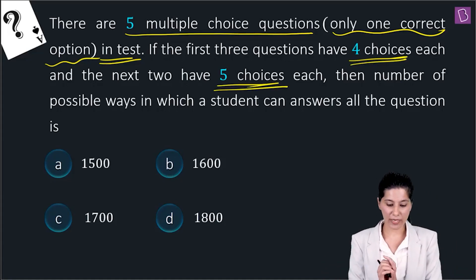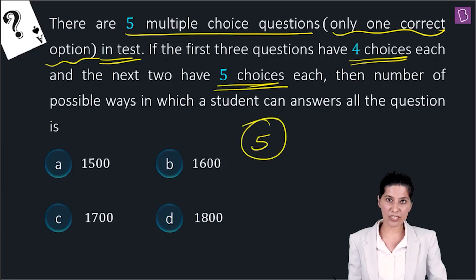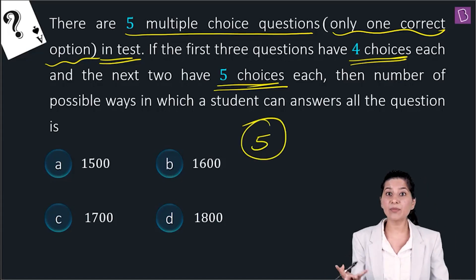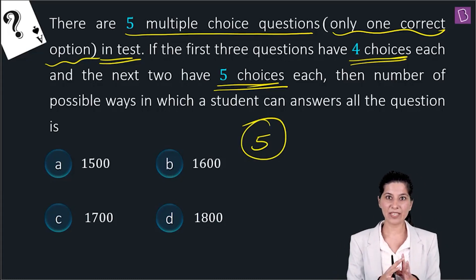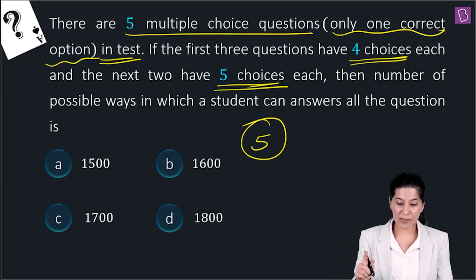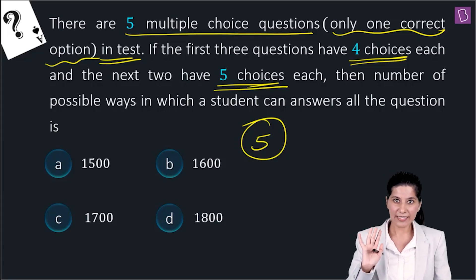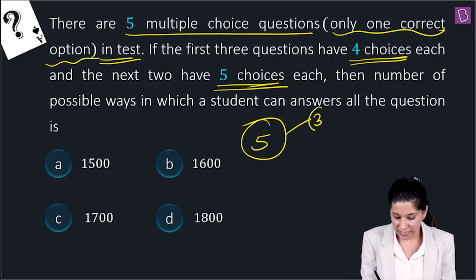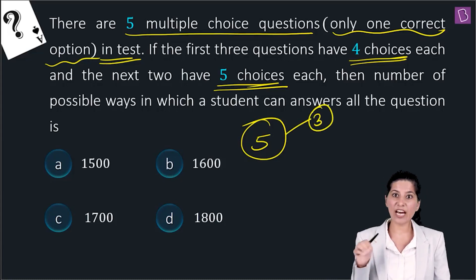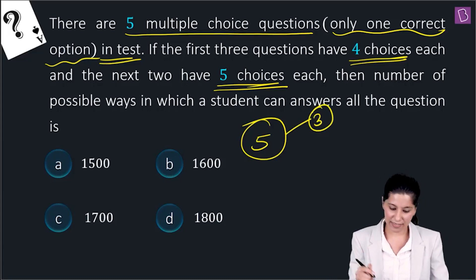So first of all, we have to note that there are five questions. What type of questions are they? Multiple-choice questions — choices are given but only one option is correct. In the first three questions, there are four choices: A, B, C, D.